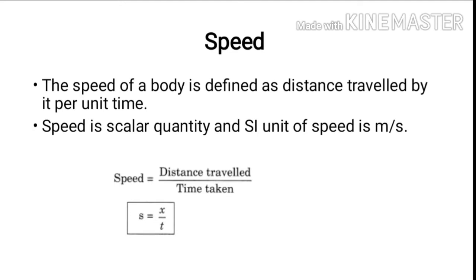Speed. The speed of a body is defined as the distance travelled by it per unit time. Speed is a scalar quantity and the SI unit of speed is meter per second. The mathematical expression of speed is distance travelled divided by time taken.